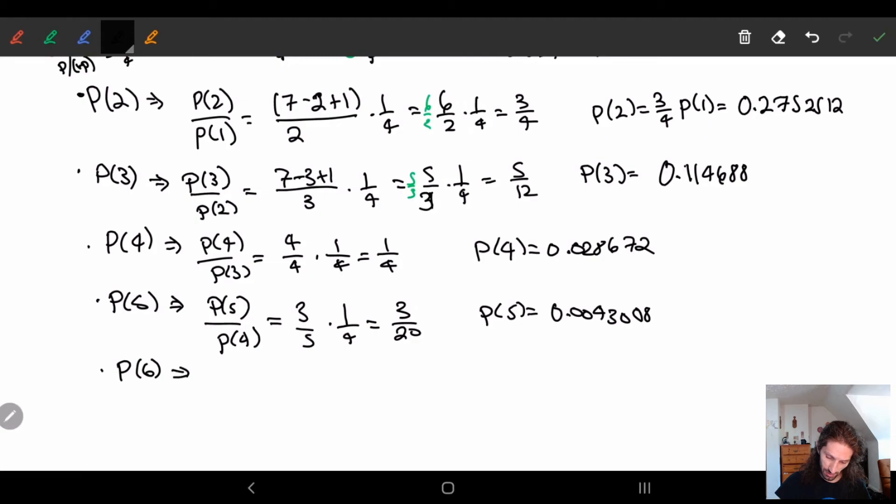0.0043008. We have two more to go. p of six. So p of six divided by p of five. So we get two-sixths times one-fourth. So we get one over twelve. So p of six is equal to 0.0003584. Of what is this? Five-five-eight-four.